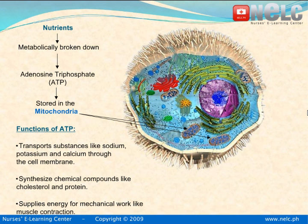There are three main ways as to how ATP aids the cells in performing its functions. First, it transports substances like sodium, potassium, and calcium through the cell membrane. Second, it synthesizes chemical compounds like cholesterol and protein. And third, it supplies energy for mechanical work like muscle contractions.